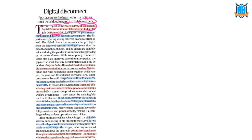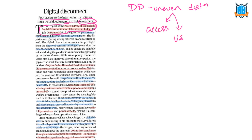Before we proceed, we need to understand what is this digital divide or digital disconnect. Then we should understand the highlights of this article and the suggestions for overcoming the digital divide. The digital divide means uneven distribution with respect to ICT technology. This can be in terms of access to the internet and ICT services, or usage — for example, we may have internet but not the tools for using it — and finally the impact of this digital divide.